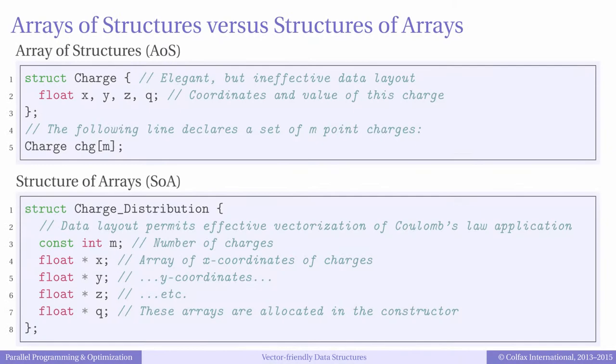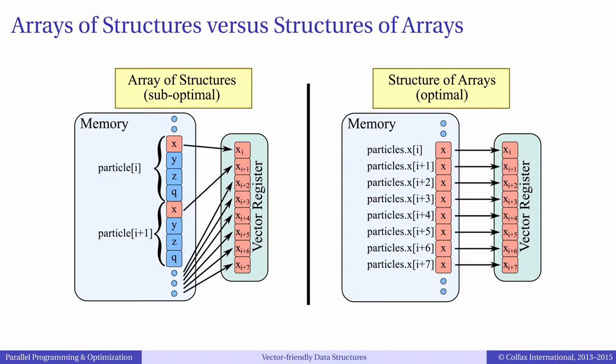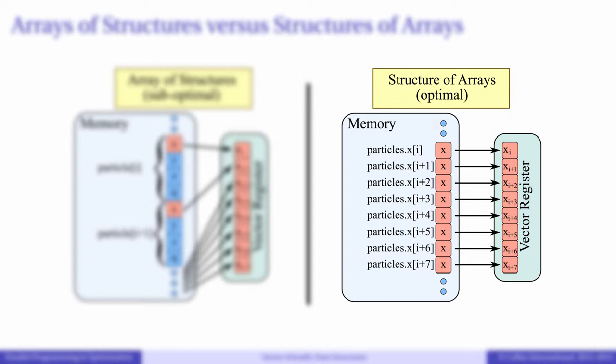Instead of this array of structures, we can design the code differently. We can declare one array for all coordinates x, another array for y, and so on. For convenience, we can put those arrays into a structure. So now instead of array of structures, AOS, we have a structure of arrays, SOA. The advantage of this approach is that now when we write the loop, we access consecutive values of x for contiguous values of i, the same for y, z, and q.